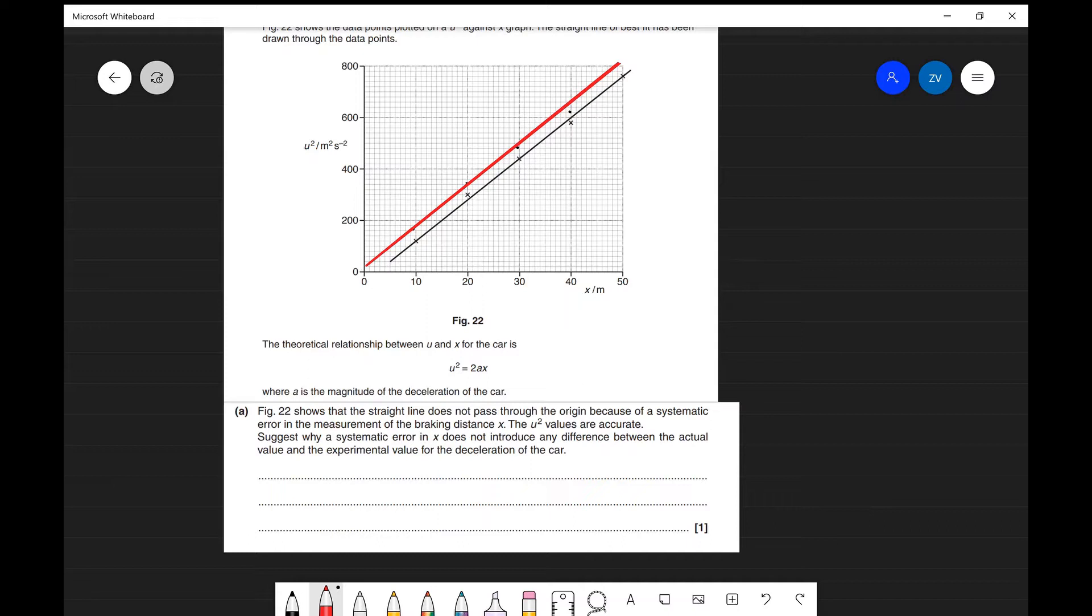The question is asking us, why does a systematic error not introduce any difference between the actual value and the experimental value? Well, if we look over here, the acceleration of the car is actually given by the gradient. Both the red line and the given line have exactly the same gradient. So what we can say is that the gradient remains the same. That means that the value of the acceleration is going to be the same.